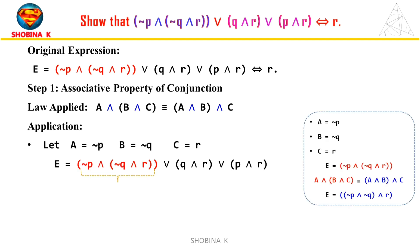Look at this part of the expression. Here, A is not p, B is not q, and C is R. On applying this property, we rewrite the expression as (not p and not q) and R, OR (q and R), OR (p and R). Only this part is changed in step 1. The rest of the expression remains unchanged.